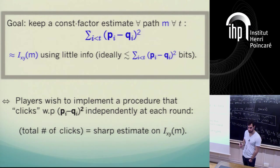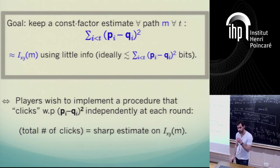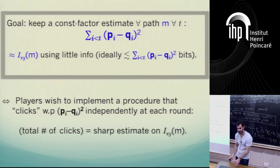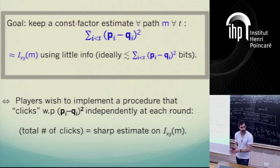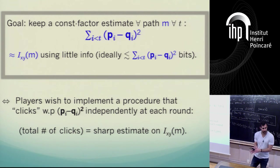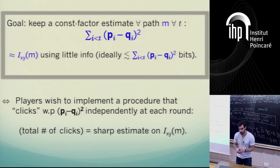What I claim is that if the players have such a primitive that costs them little overhead in information, then if they're willing to pay this small overhead, they will have a procedure that allows them to execute the original protocol with some layer running on top that allows them to keep an online record, a sharp estimate of the information cost of this particular path.